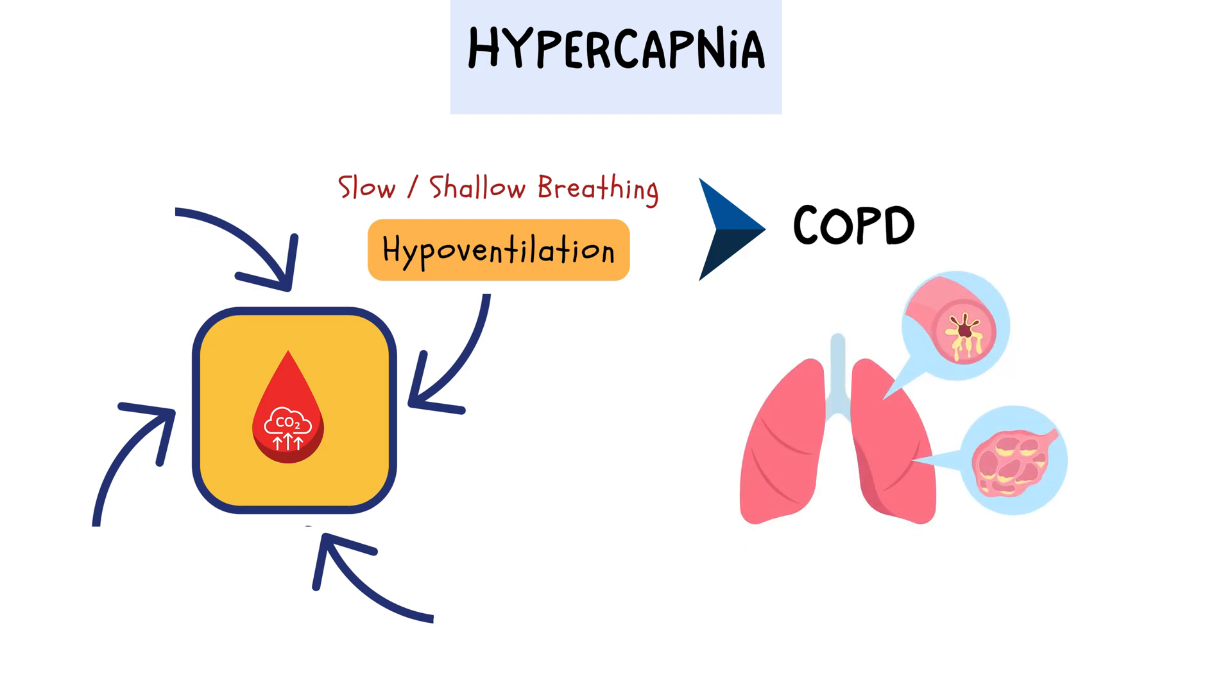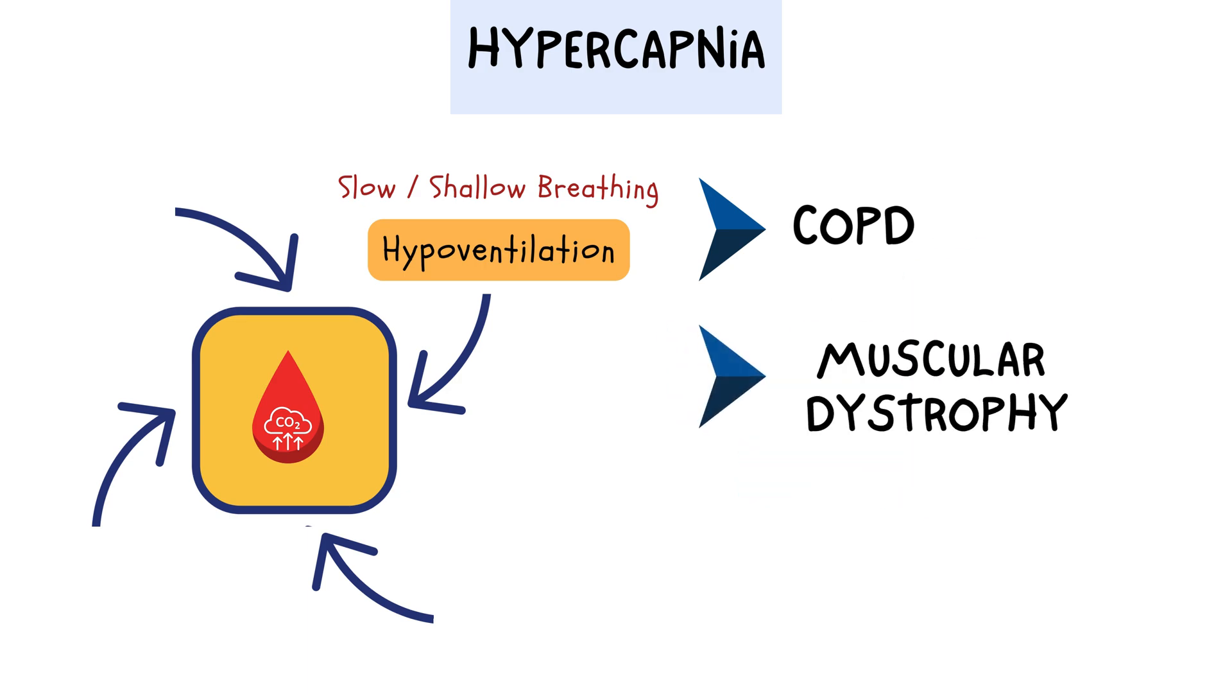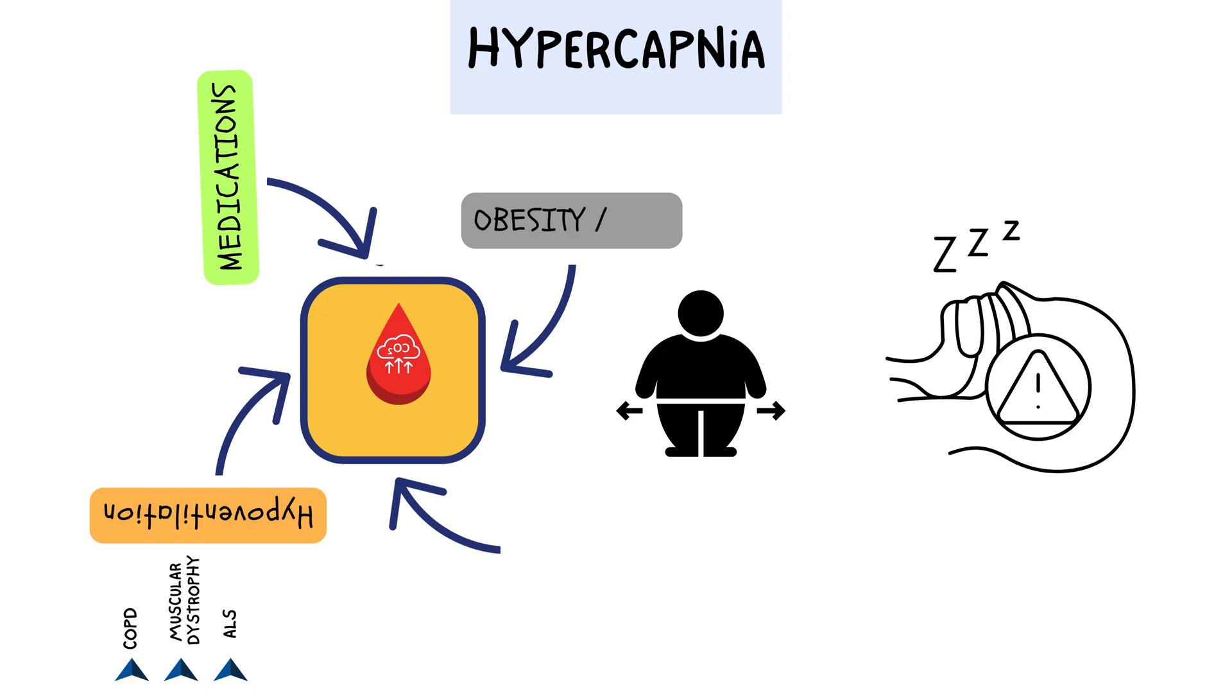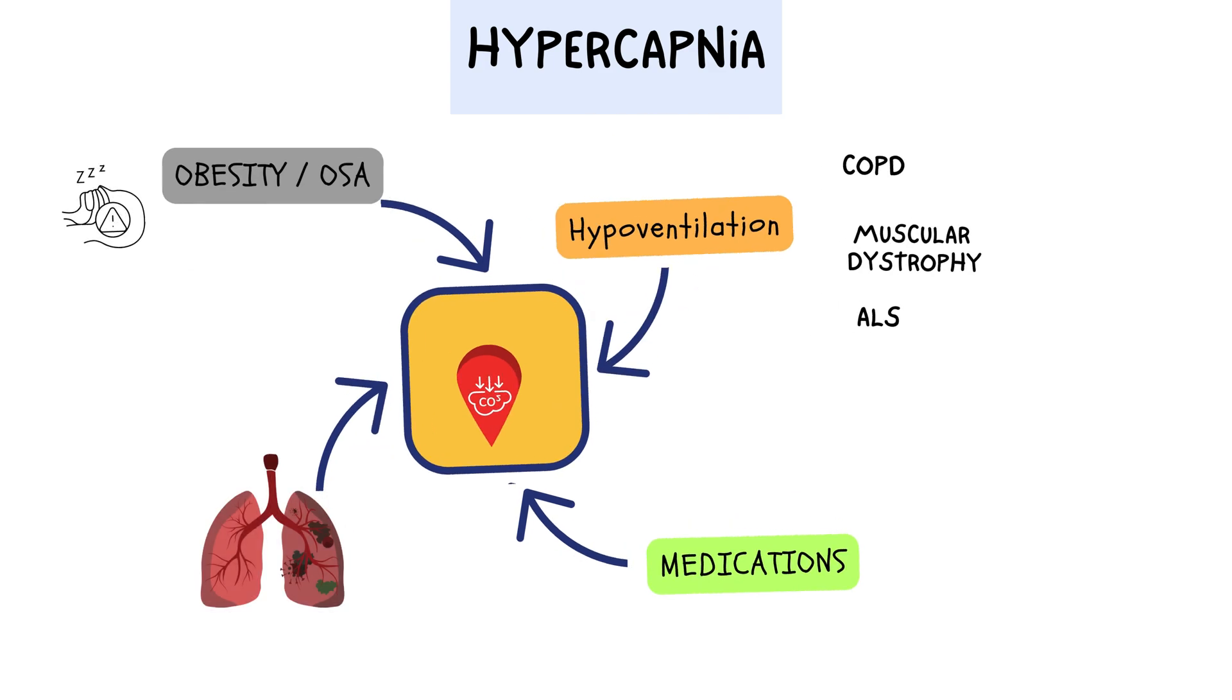One major cause is chronic obstructive pulmonary disease, or COPD, a group of lung diseases that damage the airways and make breathing difficult. But COPD isn't the only reason. Neuromuscular disorders like muscular dystrophy or amyotrophic lateral sclerosis, ALS, can weaken the muscles responsible for breathing, leading to hypoventilation and CO2 retention. Certain medications, particularly those that suppress the central nervous system, can also slow down breathing and contribute to hypercapnia. And even something like severe obesity can play a role, as excess weight can restrict lung expansion and make it harder to breathe deeply. So, as you can see, the causes of hypercapnia are quite diverse, and understanding the root cause is crucial for effective treatment.